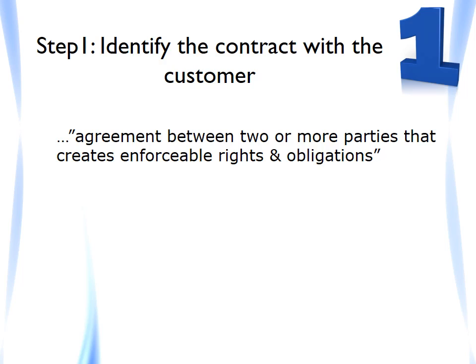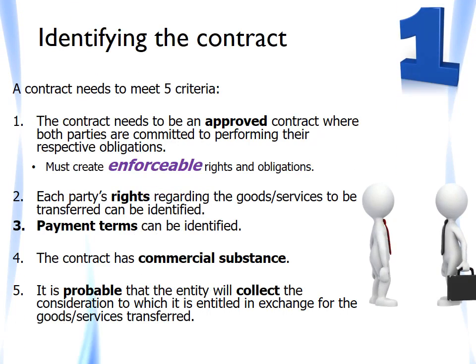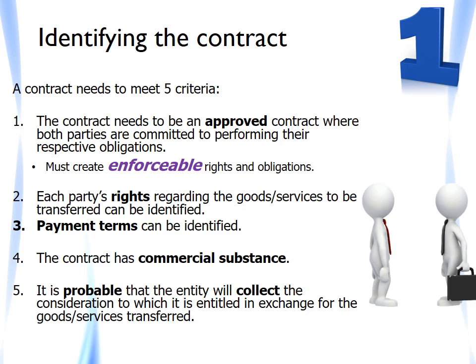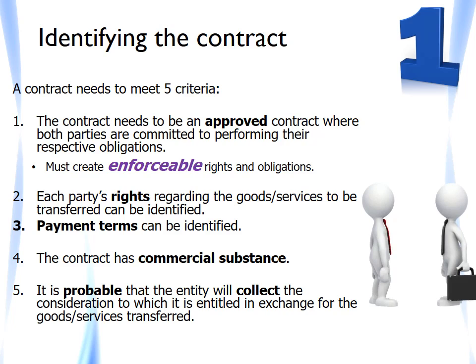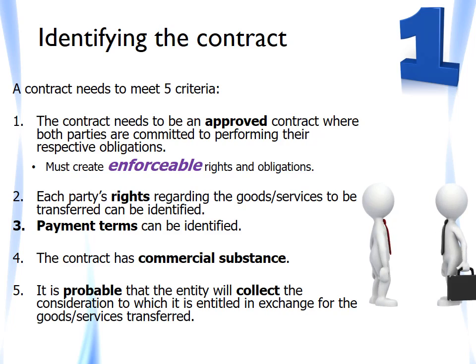The first step in this five-step model is to identify the contract with the customer. A contract is defined as an agreement between two or more parties that creates enforceable rights and obligations. IFRS 15 introduces five criteria which now need to be met before you can pass step one. These include: the contract must be approved and both parties must be committed to their obligations; each party's rights can be identified; payment terms can be identified; the contract has commercial substance; and it must be probable that the entity will collect the consideration to which it is entitled.